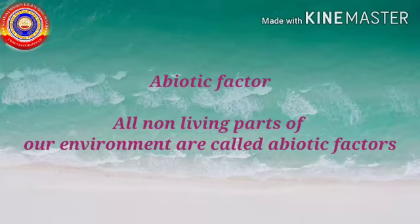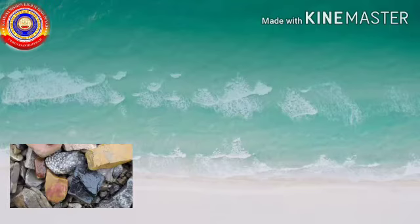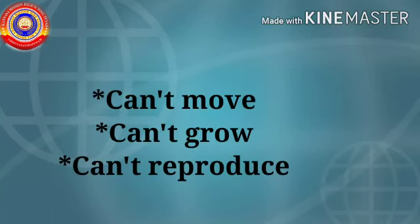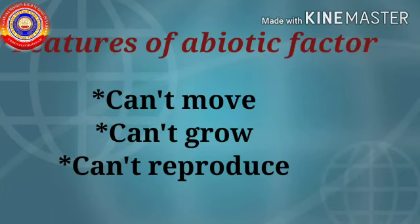Once more — all non-living parts of our environment are called abiotic factors. Examples of abiotic factors: sun, moon, rocks, soil, water, and so on. The features of abiotic factors are: they can't move, they can't grow, and they can't reproduce.